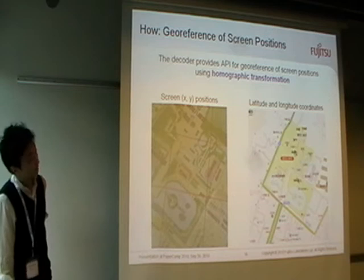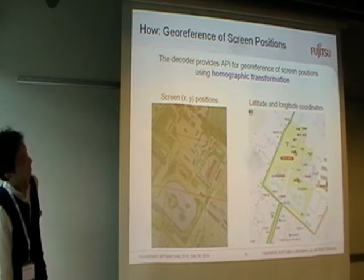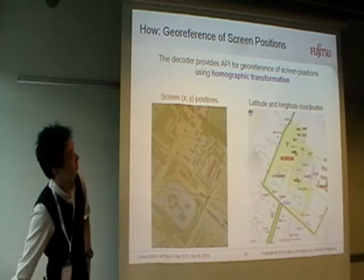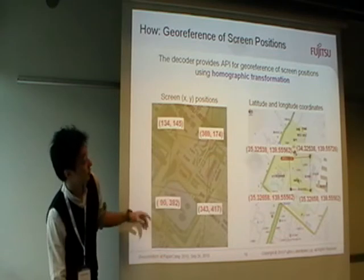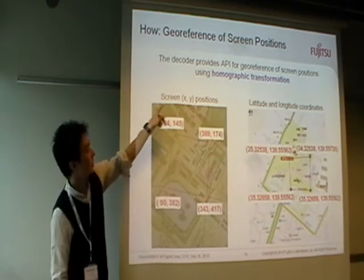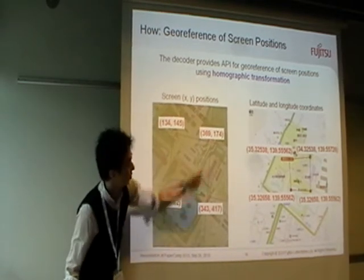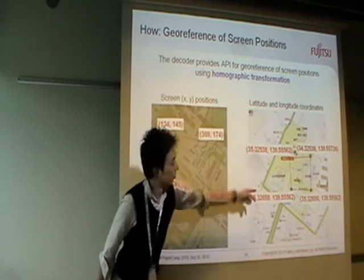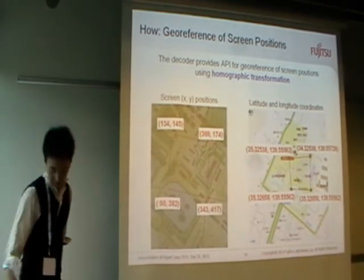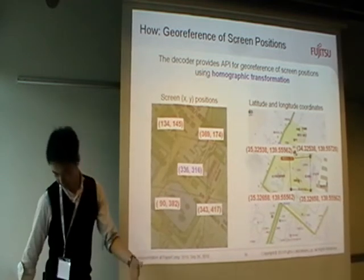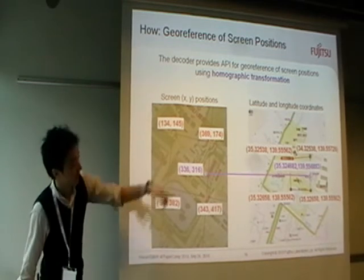After decoding the embedded data, the decoder initializes and provides an API for georeferencing screen positions. This uses a homographic transformation from the screen XY positions of the four corners of the grid to the latitude and longitude coordinates of those four corners. For example, a screen position translates to latitude and longitude coordinates using these APIs.